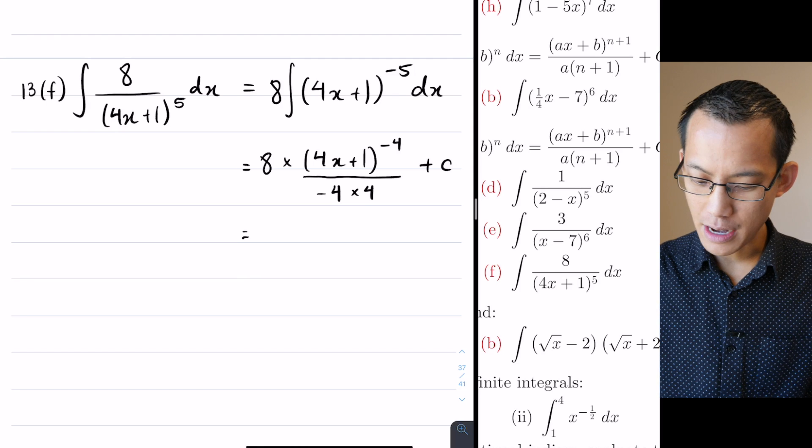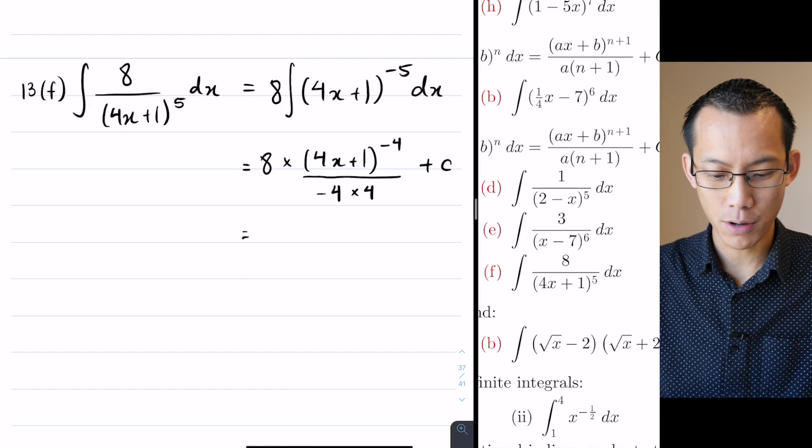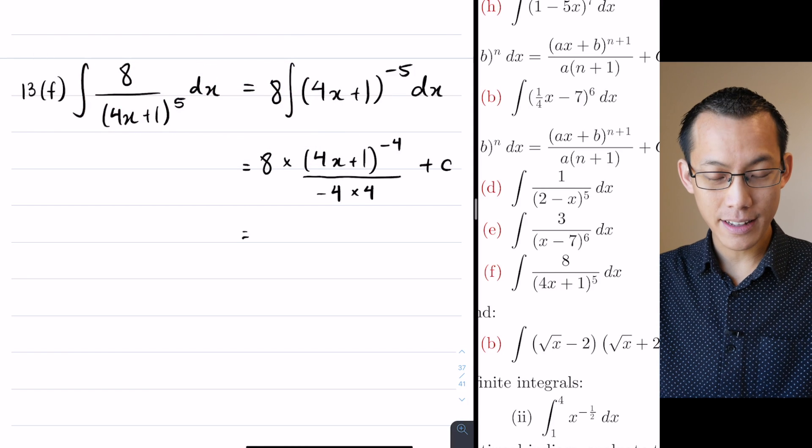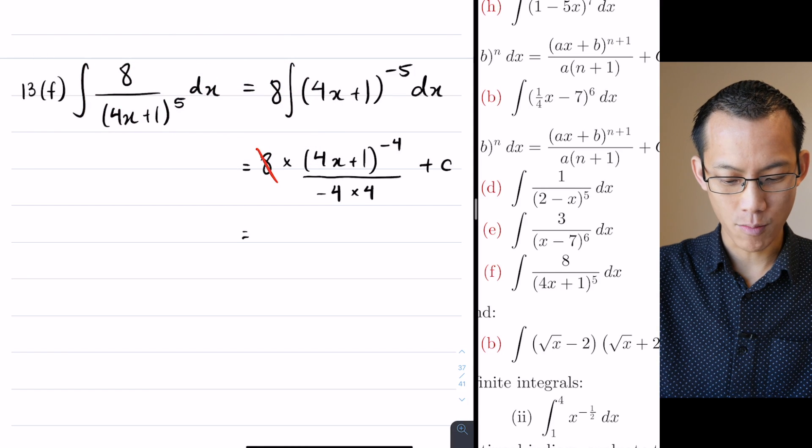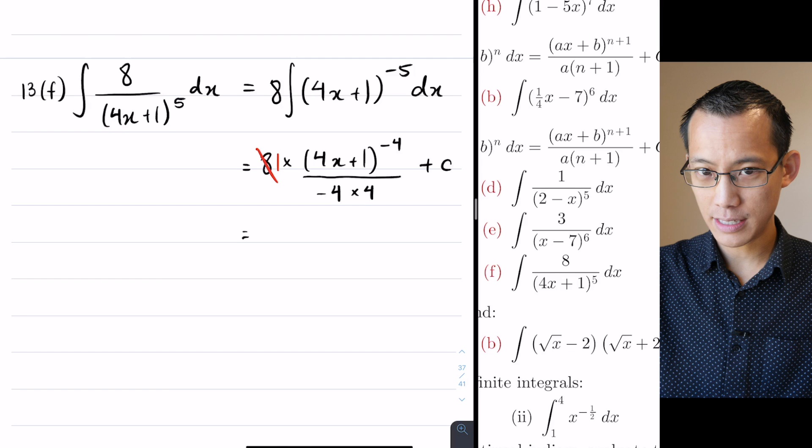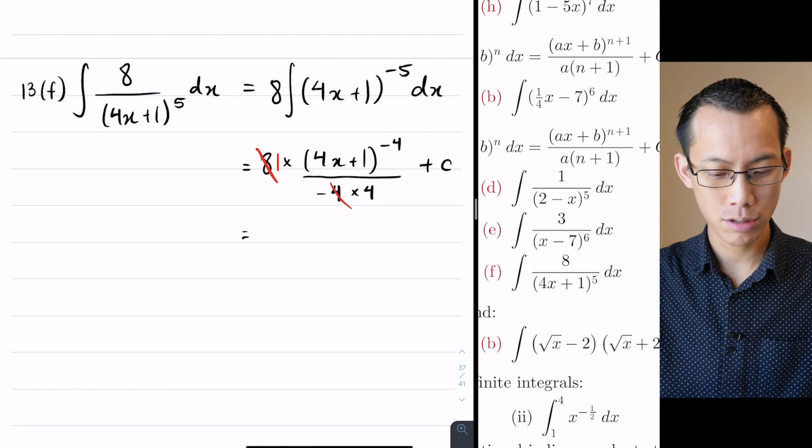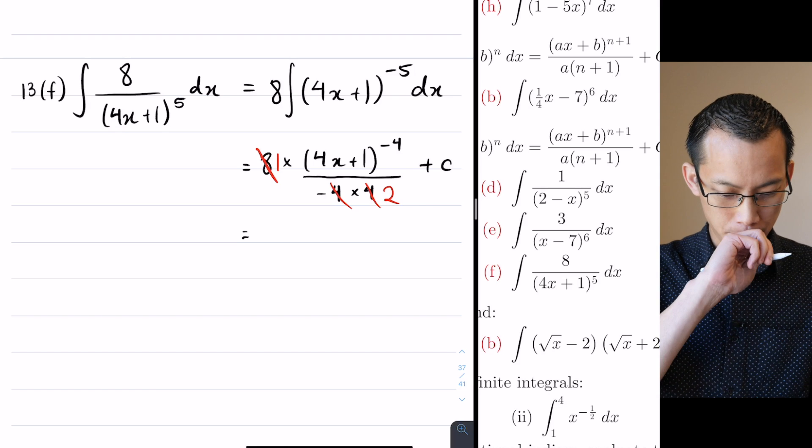So the integration is done, and I should tidy this up because it is a bit of a garbled mess. I've got an 8 on the top and then I've got 16 on the bottom, so I can do some cancelling immediately. There's a factor of 8 that I can cancel, so that would become 1.